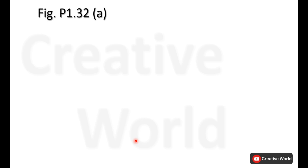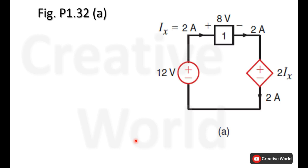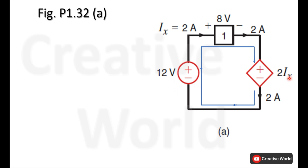For figure 1.32a, the circuit is redrawn here. The direction of current in this circuit is indicated with blue arrows. The current through this circuit is 2 amperes, and the voltage across each element is also given, except for the current dependent voltage source, whose voltage will be calculated using the value of ix.